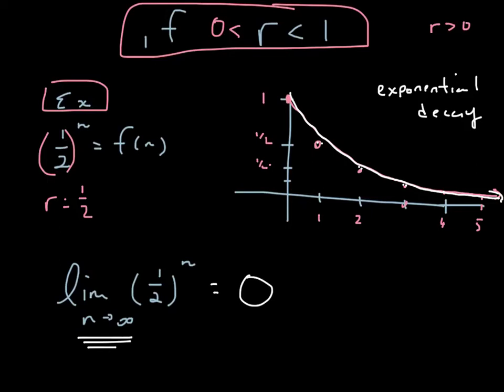Think about it like walking toward a wall: if you start here and always go halfway, then halfway again, and halfway again, you'll get very close to the wall. The distance between you and the wall will get close to 0 but will never quite equal 0.